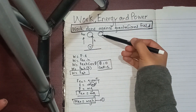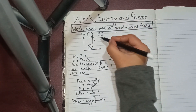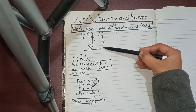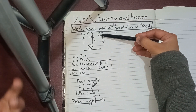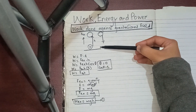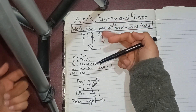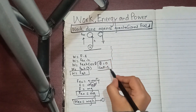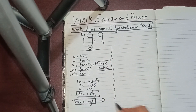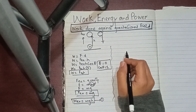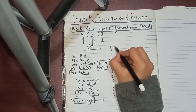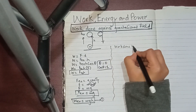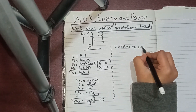Now consider the body coming back down. We want to find the work done by the gravitational force. The displacement is directed downward, but gravity is also pulling the body downward, so the direction of the gravitational force and the displacement are considered. Let's work out the work done by the gravitational force.